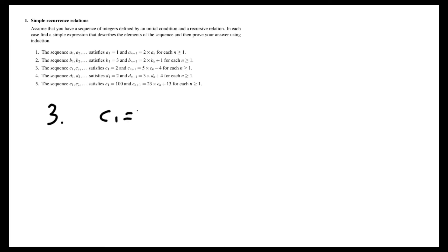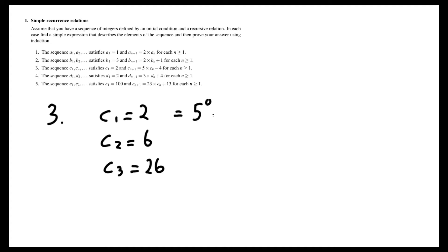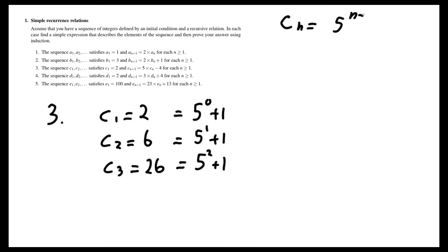For the third part, we can again look at the pattern. c1 is equal to 2, and then c2 is 5 times that minus 4, which gives us 6. c3 is 5 times that minus 4, which gives us 26, and so on. If we subtract 1 from these, we see that we get powers of 5. So this is 5 to the 0 plus 1, 5 to the 1 plus 1, and so on. So we hypothesize that in general, cₙ is equal to 5 to the n minus 1 plus 1.